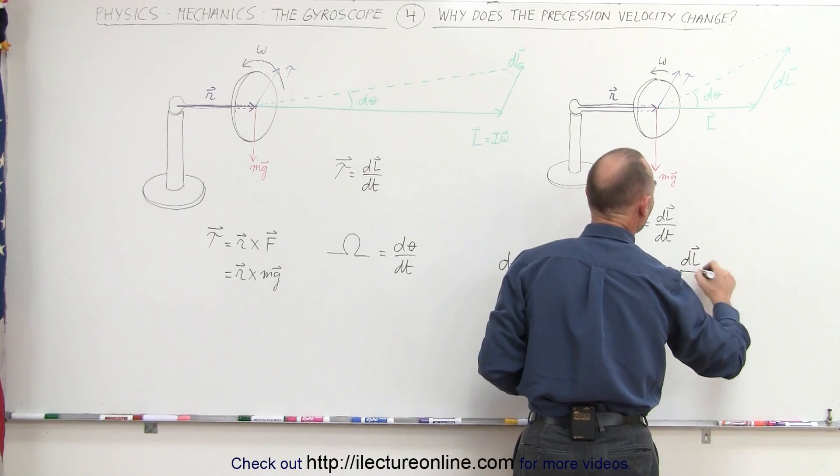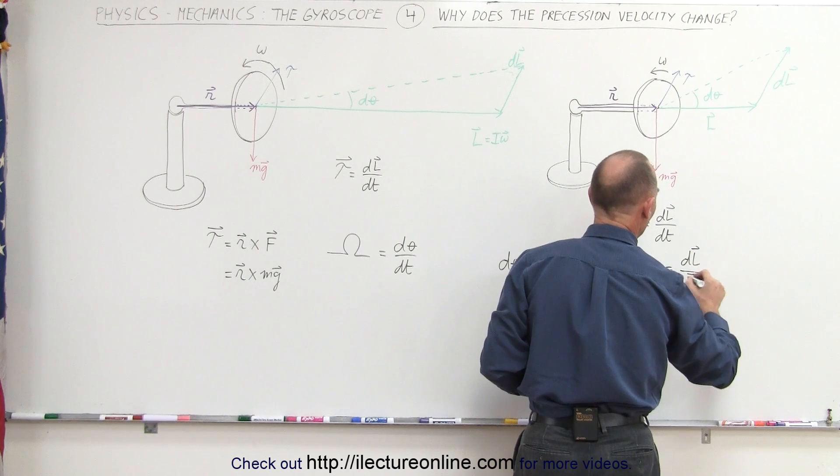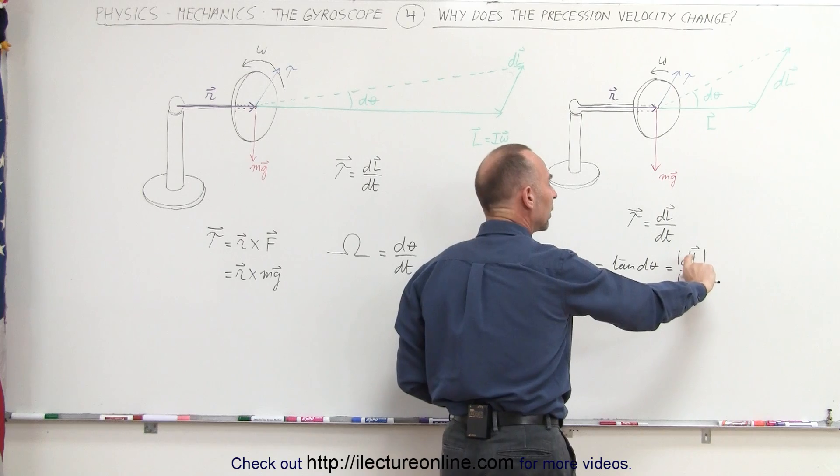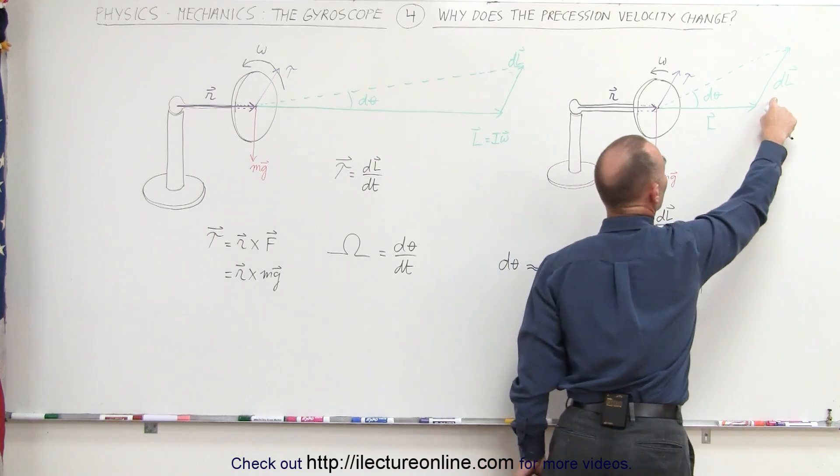which is dL, over the adjacent side, which is L. So if we take the magnitude of that, the ratio of dL over L will become larger as dL becomes larger.